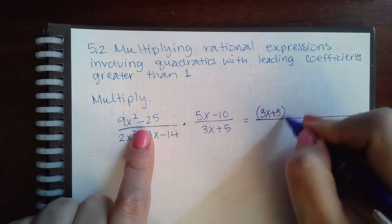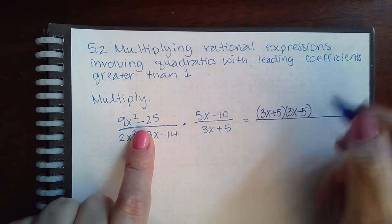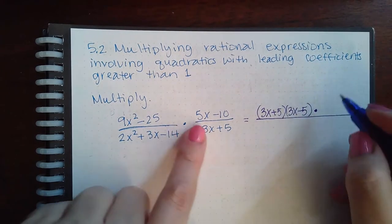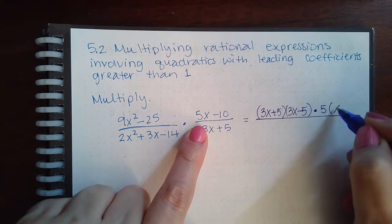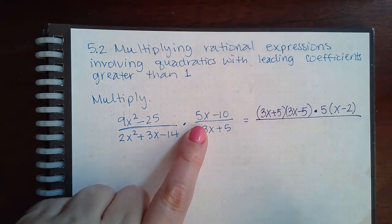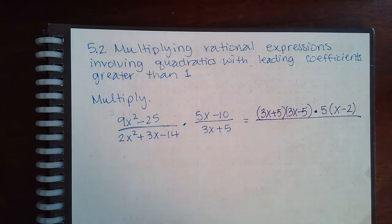So this numerator is a difference of squares, so it factors into 3x plus 5 and 3x minus 5. Then this actually has a GCF of 5, so if I factor that out, this becomes x minus 2. So that's my numerator all together.